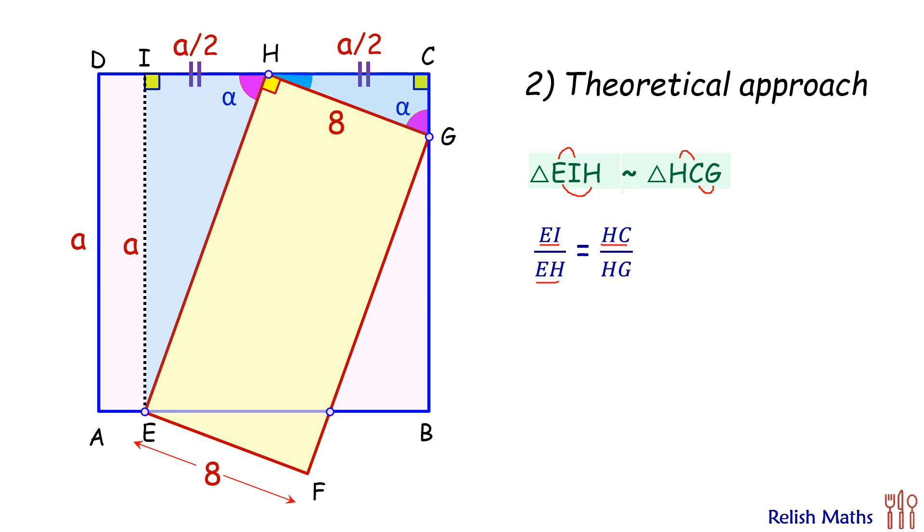HC is A/2, and HG is 8 centimeters. Solving this equation, A will get cancelled on both sides, and we'll get EH as 16 centimeters. And EH is nothing but the length of the rectangle, and thus the area of the rectangle is